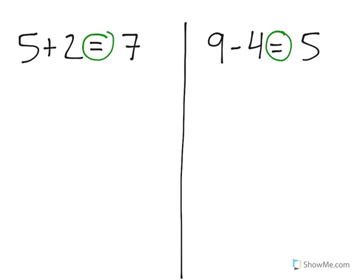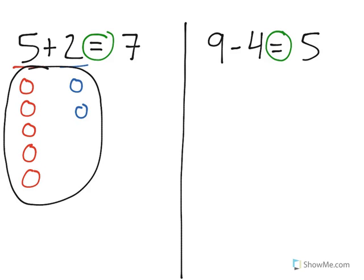On this problem to the left, it says that 5 plus 2 equals 7. Now, what we know about addition tells us that when we start with a group of 5 and we add 2, we want to find out the total of how many are in that group altogether.